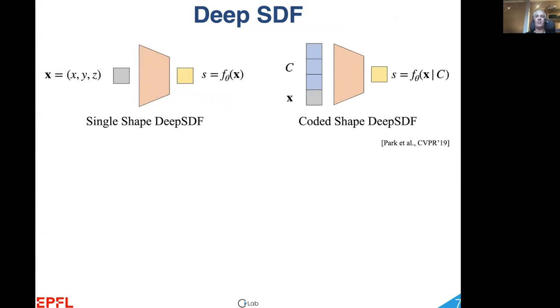Furthermore, the deep network can take as input, in addition to the point X, a code C that conditions its behavior. As a result, changing C changes the surface shape, and C becomes de facto